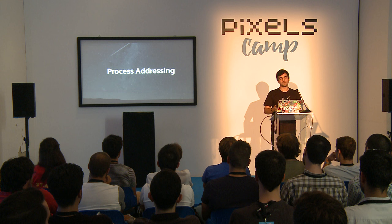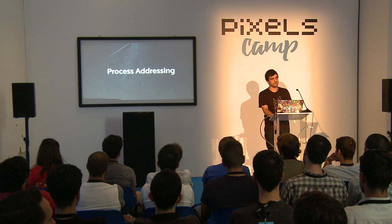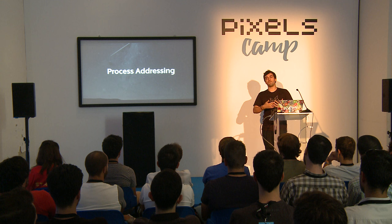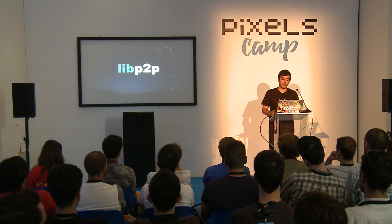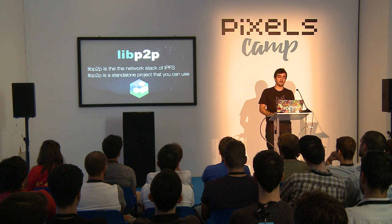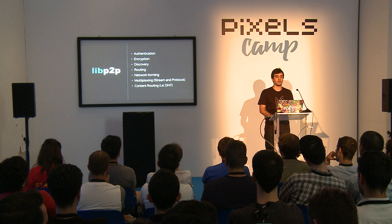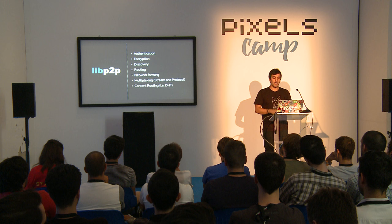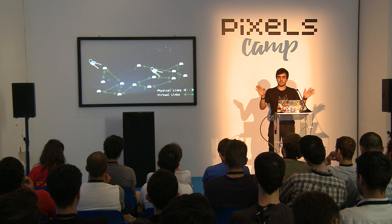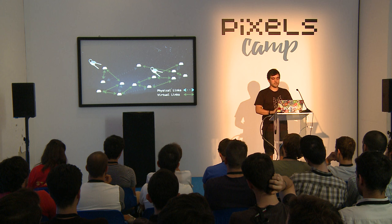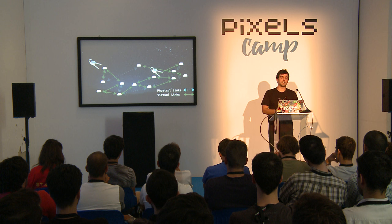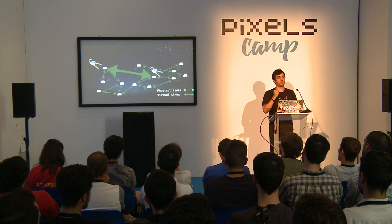Let's talk about process addressing. Because we want IPFS to be fully peer-to-peer without relying on central servers, we needed to find a way to address processes in the network independently of where they are. That endeavor eventually became a full standalone project called LibP2P. LibP2P is the network stack of IPFS and also a standalone project you can use for your own applications. It offers authentication, encryption, node discovery, routing, network forming, and content routing. You have a network with physical and virtual links speaking different protocols — as long as you know the peer you want to dial to and you have their ID — which, instead of an IP address, is a public key — you can create a connection to that peer, do a TLS-like handshake, and know you're talking to the right process.